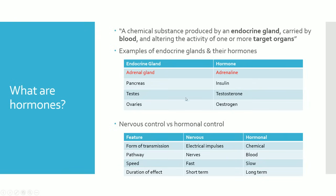There are a couple of examples you need to be aware of. The main one is probably the adrenal gland, which secretes the hormone adrenaline. We've got the pancreas, which secretes insulin; the testes, which secrete testosterone; and the ovaries, which secrete oestrogen. Testosterone and oestrogen are important in developing male and female characteristics, along with other specific functions.